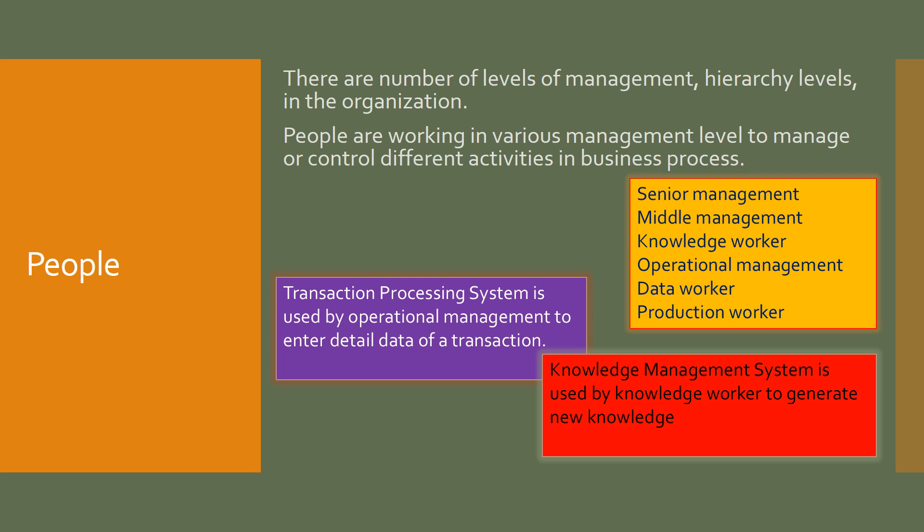People are organized in a hierarchy from the senior-most manager to the production worker. At the top is senior management, then middle management, who are responsible for coordinating activities at the operational management level. Knowledge workers create new knowledge and share it with operational management after receiving instructions from senior management. Data workers and production workers operate under operational management. As they perform various tasks at these levels, they need specific information systems for their needs.